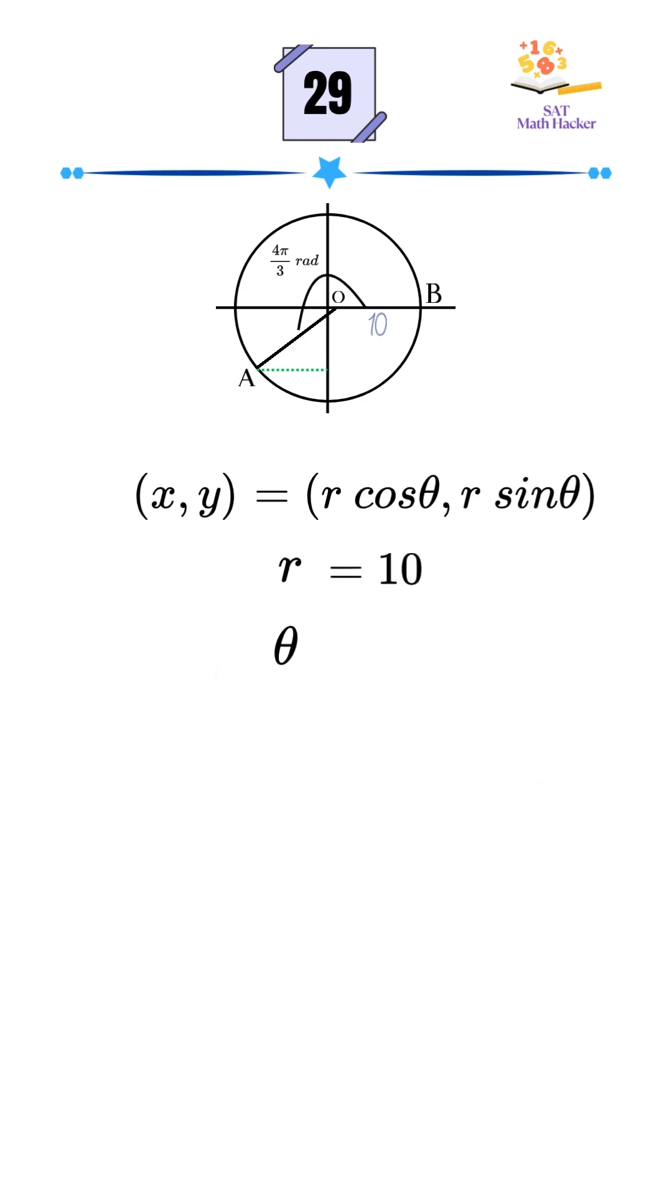In this problem, the radius r is 10, and θ is 4π over 3. Since we only need the x-coordinate, we'll use x equals r times cos θ.